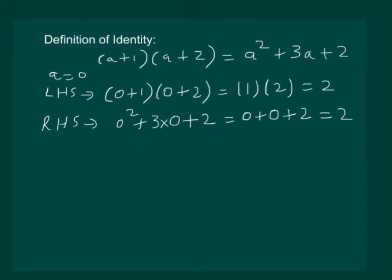Let us check again. Let us take a = -5 and substitute a = -5 in left hand side. We get (-5+1)(-5+2). This gives us (-4)(-3) which is equal to 12.